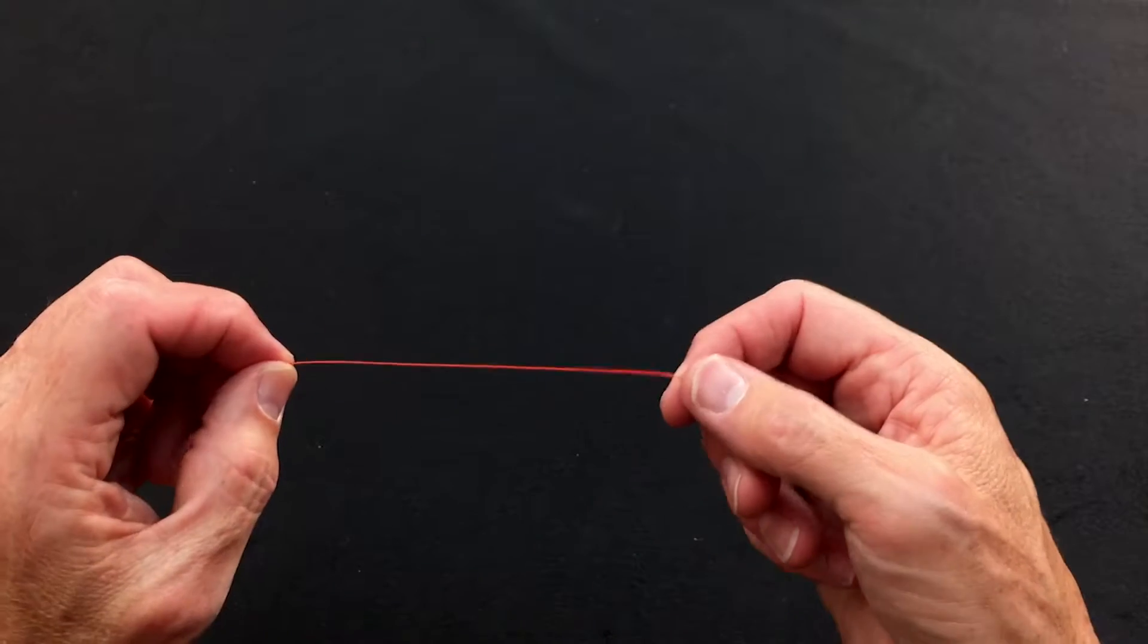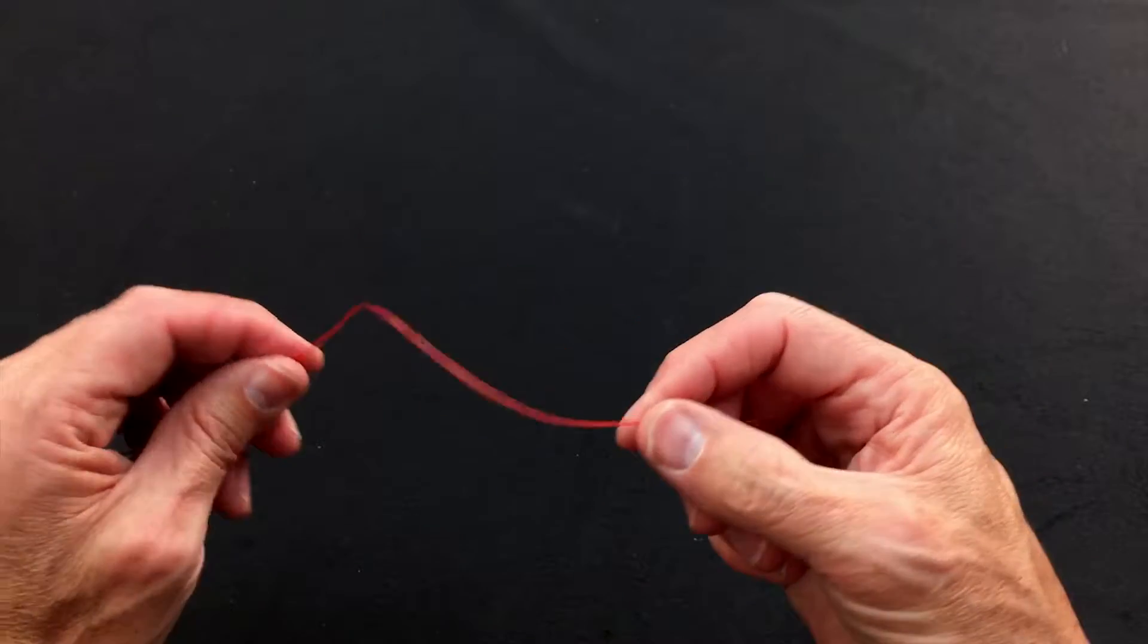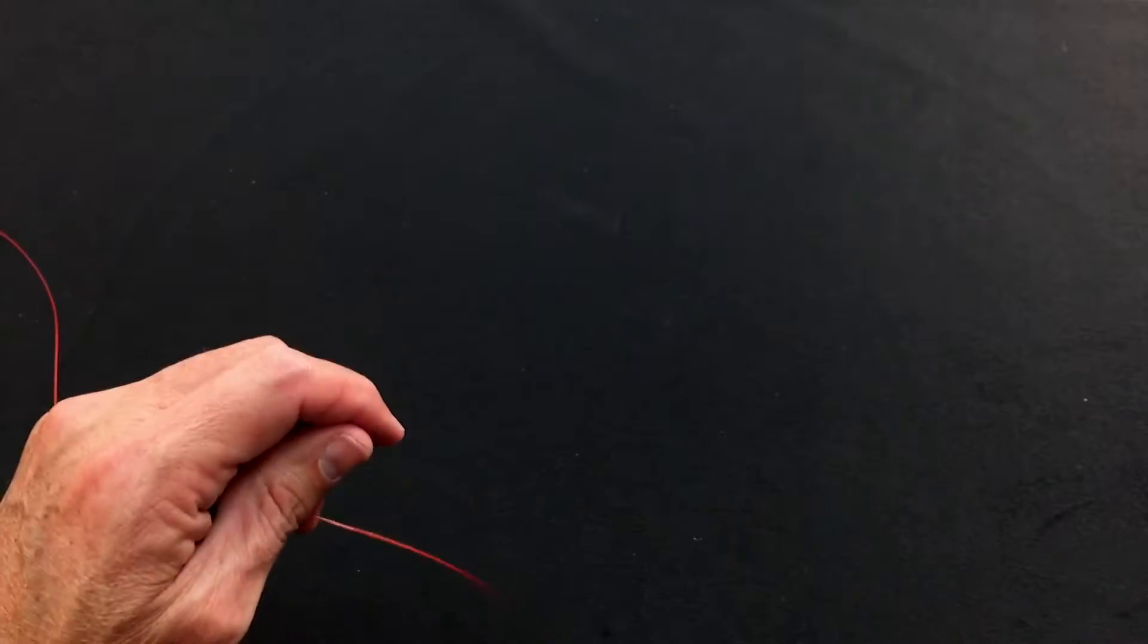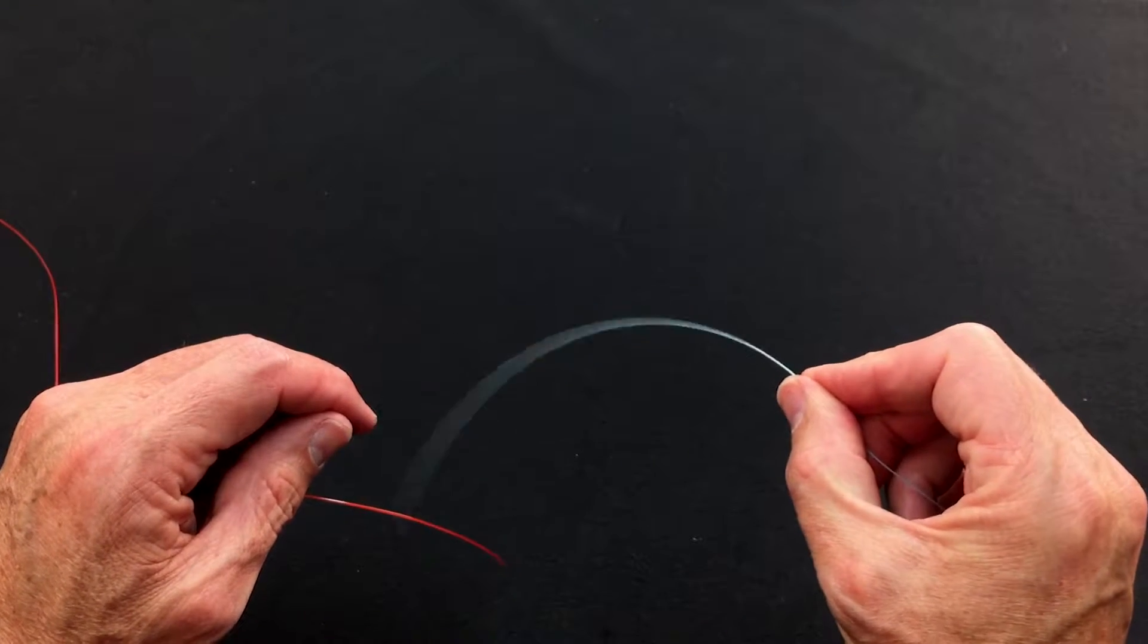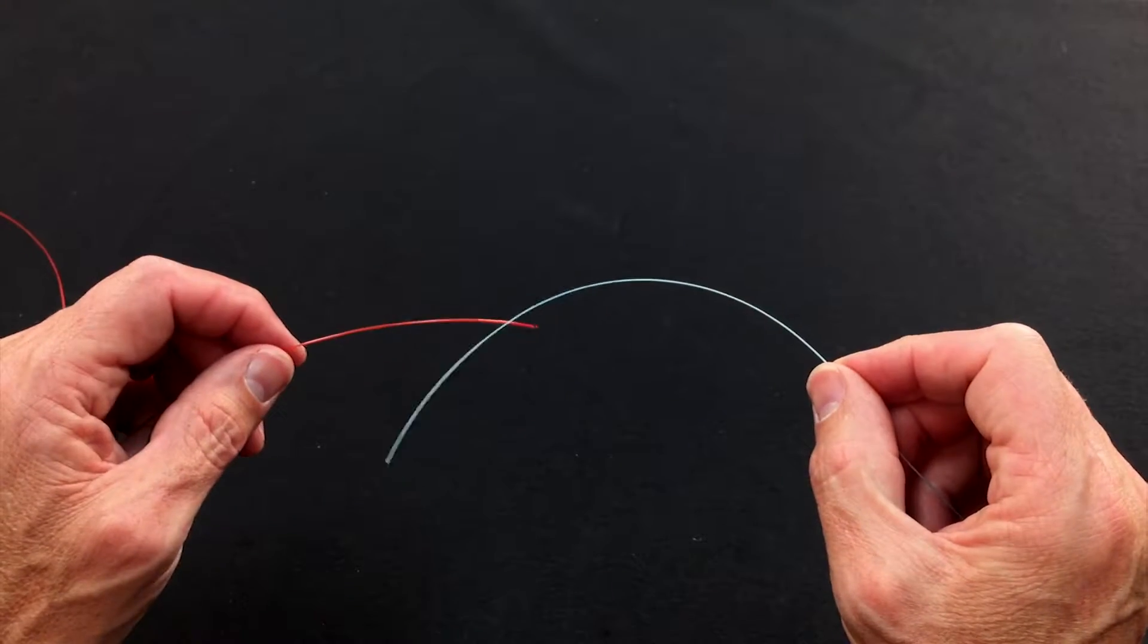So Slim Beauty, I'm going to demonstrate that in this red visible stuff. This is a 44-pound slick shooter, and I'm going to attach 25-pound slick shooter to it, this thin blue stuff, so it's just easy to see.